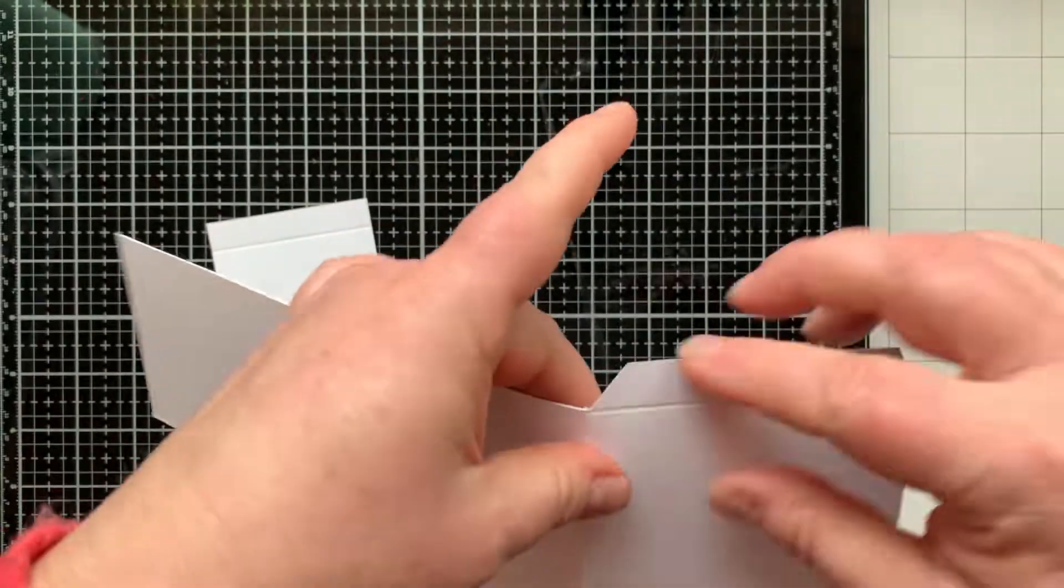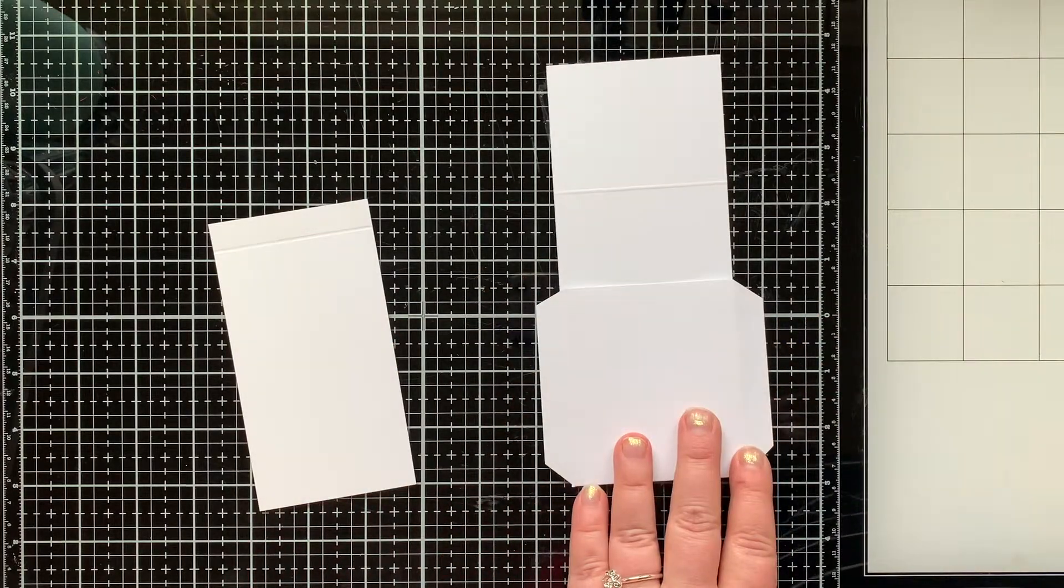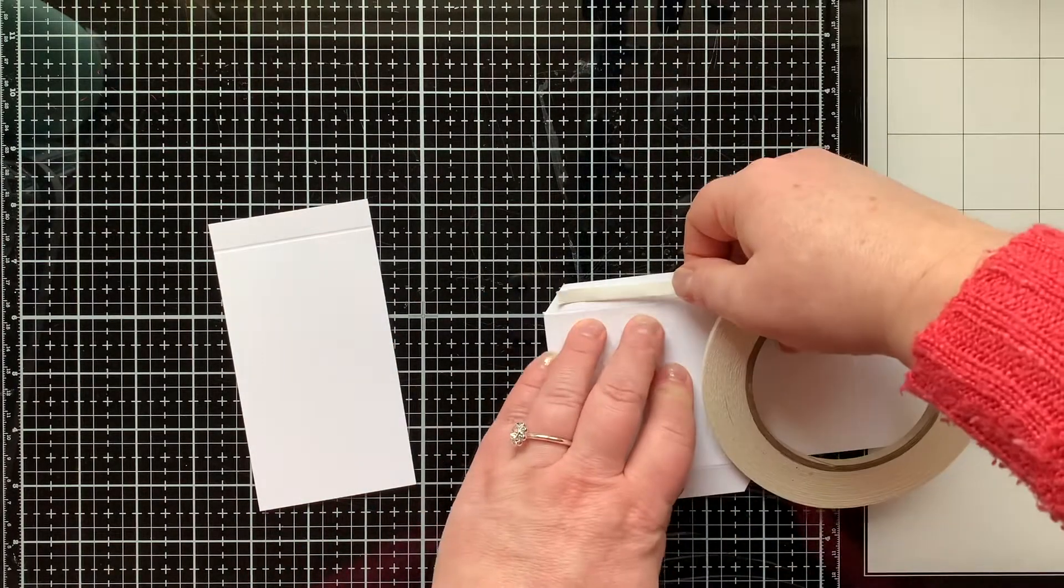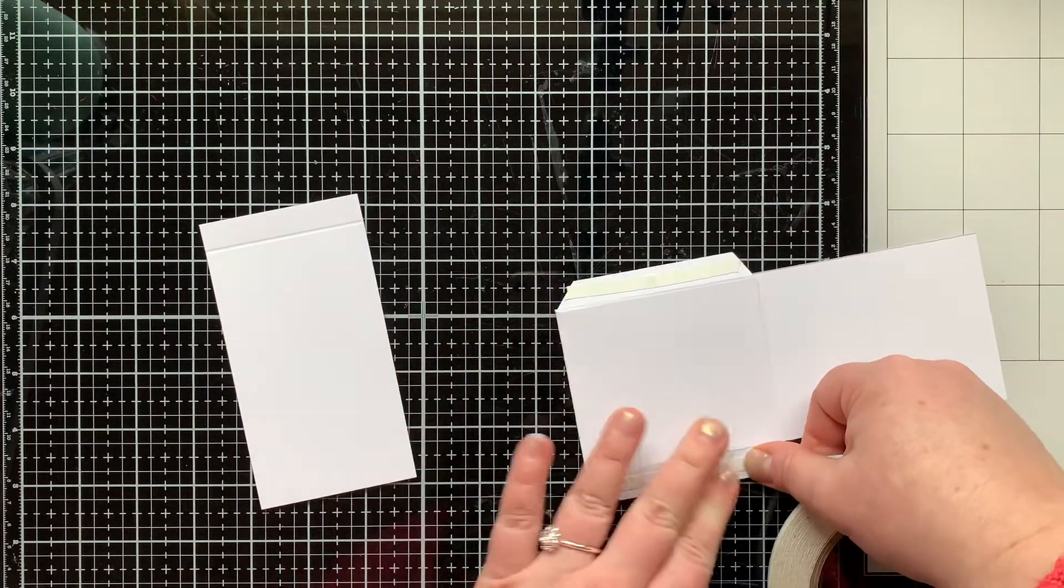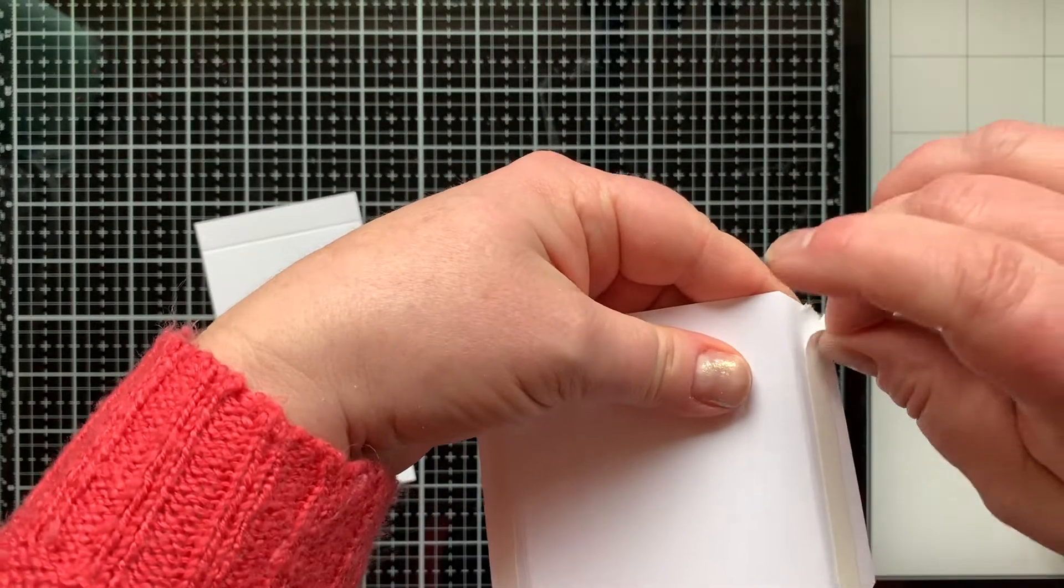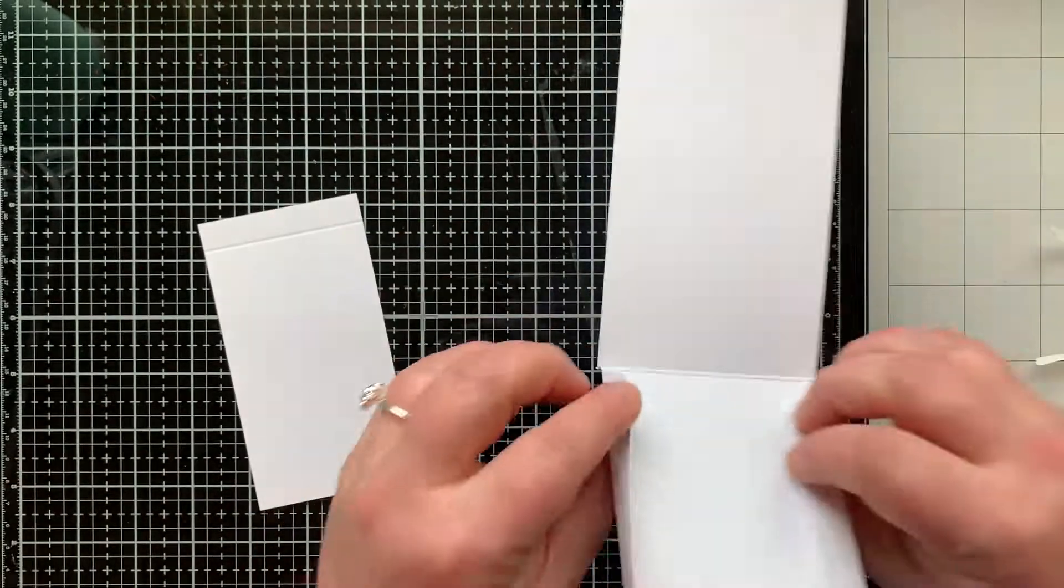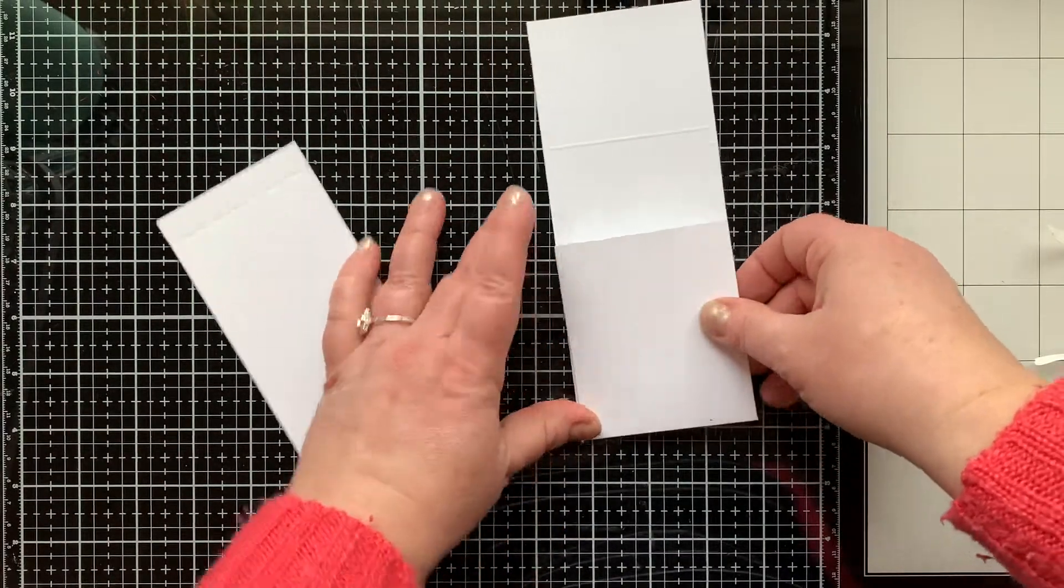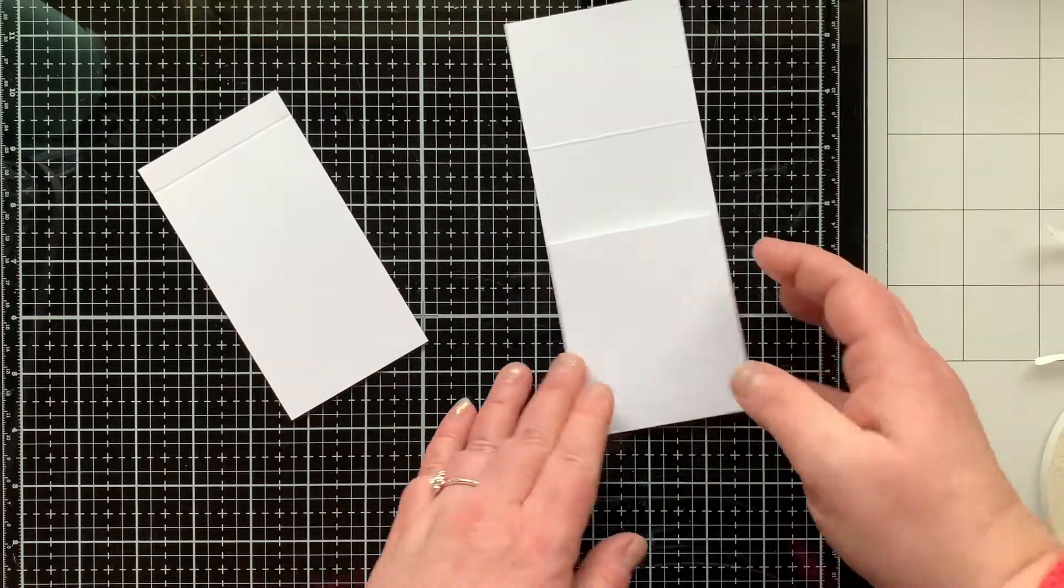So now we're going to fold on the score lines and get this pocket ready to go. I have folded in my tabs where I will add some double stick tape on both of those tabs, and that's what's going to hold the pocket shut. So once that's in place we peel off the liner and those will get folded back, and then you just close this to pick up the back piece and it'll stick right to those tabs and we have a pocket.